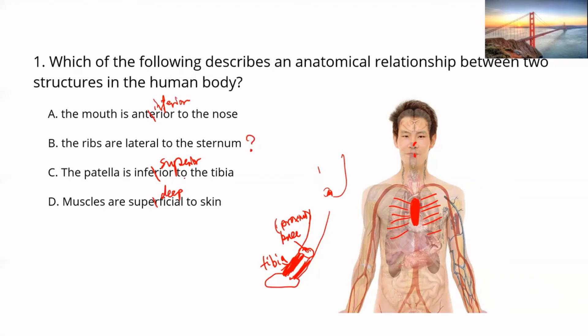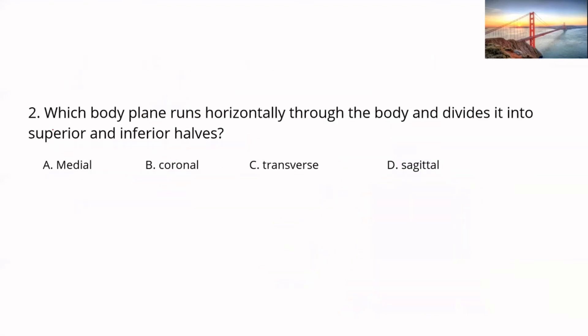None of the other options are correct, so the answer is B. For question two: there is only one body plane that runs through the body horizontally and divides it into superior and inferior — that's the transverse plane, also known as cross-sectional.